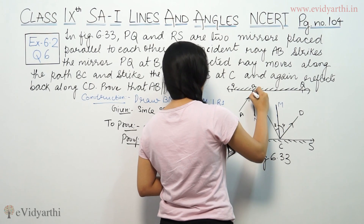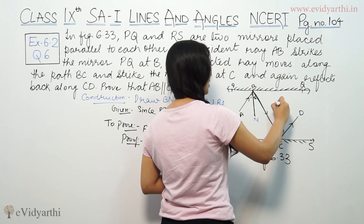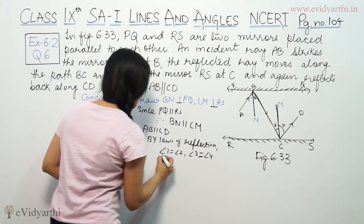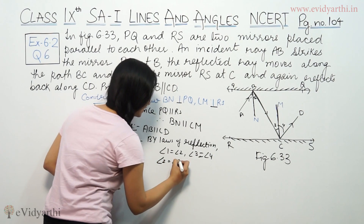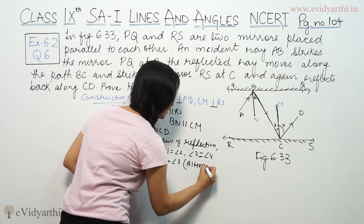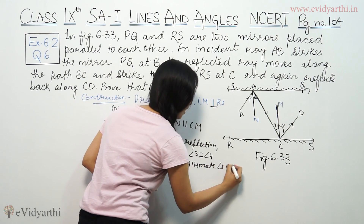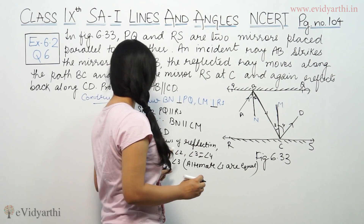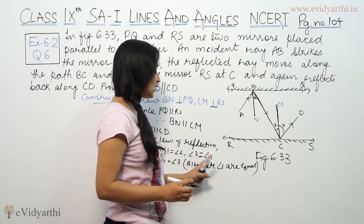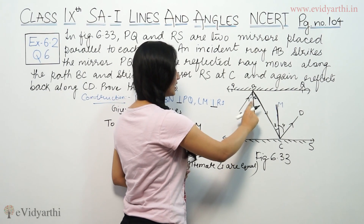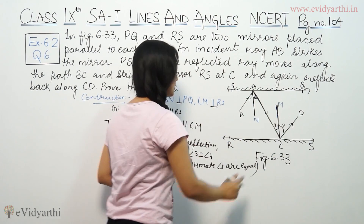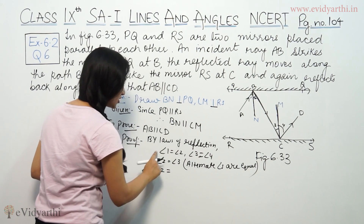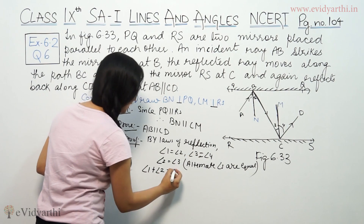When you see the Z shape, that means we have alternate angles. That means angle 2 is equal to angle 3, because alternate angles are equal. So if angle 2 equals angle 3, and angle 1 equals angle 2, then angle 3 equals angle 4. Now we add: angle 1 plus angle 2, and angle 3 plus angle 4.